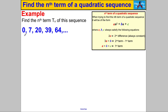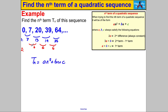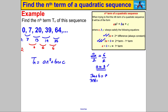One more for you to try — pause the video and have a go. The first differences are 7, 13, 19, and 25 (64 − 39 = 25). The second differences are 6, 6, and 6 — constant — so it is quadratic. The nth term is of the form an² + bn + c. Since 2a = 6, we get a = 3. Then 3a + b equals the second term minus the first term: 7 − 0 = 7, so 9 + b = 7, giving b = −2.